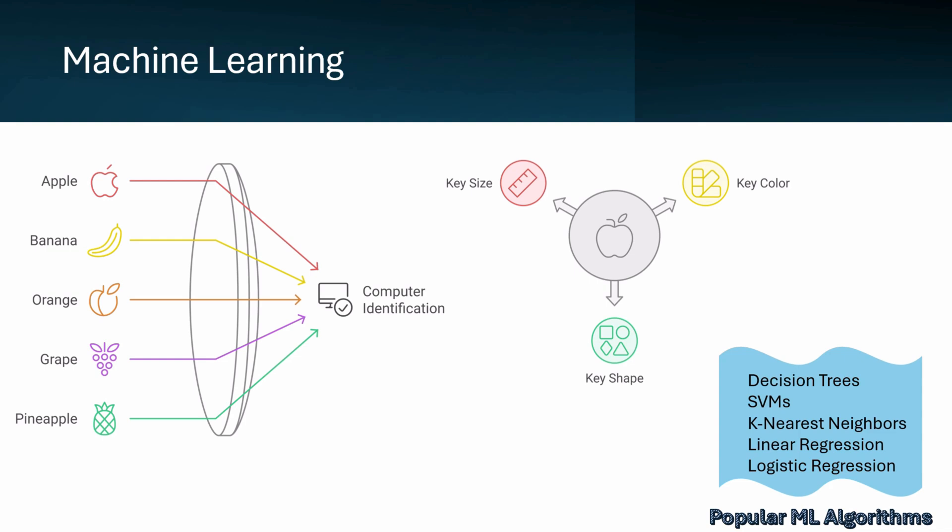There are various machine learning algorithms designed to address different types of problems. Decision trees utilize a flowchart-like structure where decisions are made based on features such as whether a fruit is red or round. Support vector machines work to find the optimal boundary between classes of data, such as apples and oranges, by emphasizing the most defining features of each category. K-nearest neighbors, a simpler algorithm, classifies new data points by examining the nearest labeled examples, akin to recognizing a new fruit by comparing it to familiar ones.